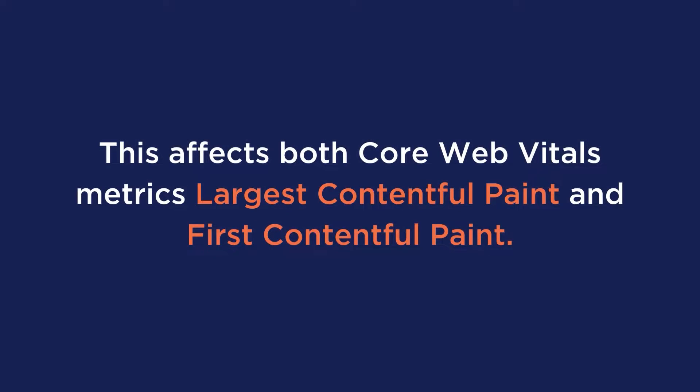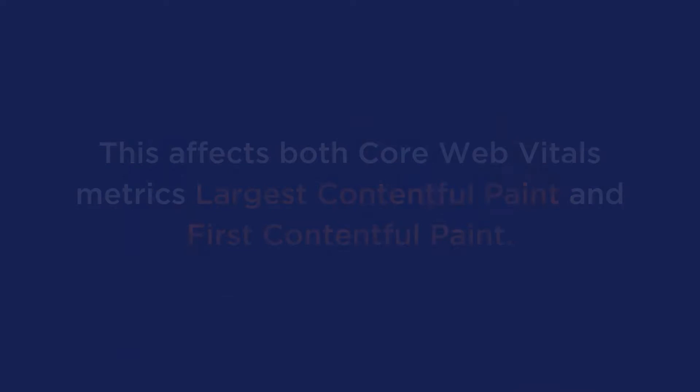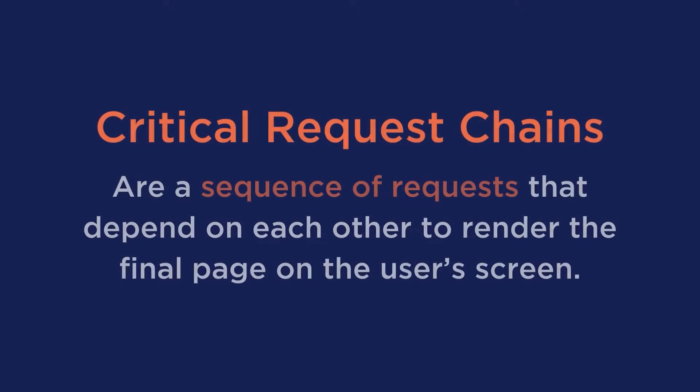A long critical request chain has a negative impact on your loading time and the perceived speed of your website. With that happening, it affects both core web vitals known as largest contentful paint and first contentful paint. What this warning means is that the critical resources needed to render the webpage are too large, as the critical request chains are a sequence of requests that depend on each other to render the final page on the user's screen.